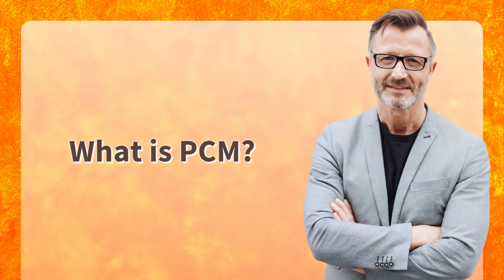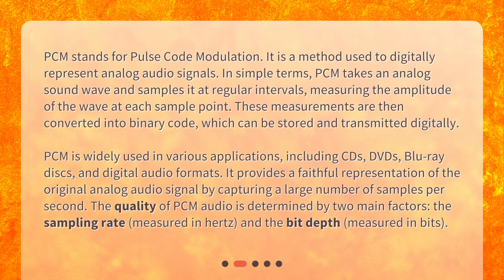What is PCM? PCM stands for Pulse Code Modulation. It is a method used to digitally represent analog audio signals. In simple terms, PCM takes an analog sound wave and samples it at regular intervals, measuring the amplitude of the wave at each sample point. These measurements are then converted into binary code, which can be stored and transmitted digitally.